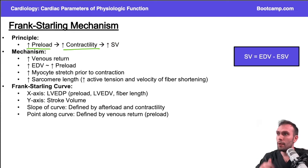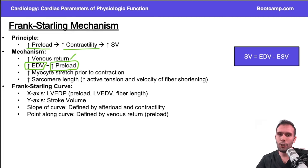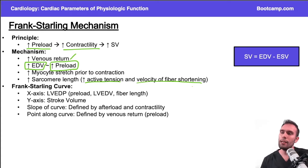As we have increases in venous return — synonymous with an increase in preload — that increased venous return going to the right atrium eventually gets to the left ventricle. So we end up with a higher left ventricular end-diastolic volume and pressure. That increase in end-diastolic volume allows for more myocyte stretch prior to contraction, accommodating more blood, increasing sarcomere lengthening, active tension, and velocity of fiber shortening.